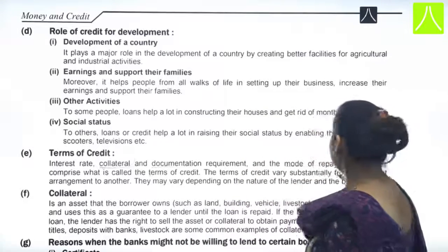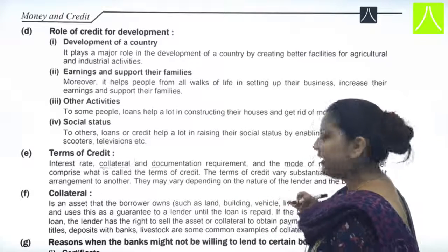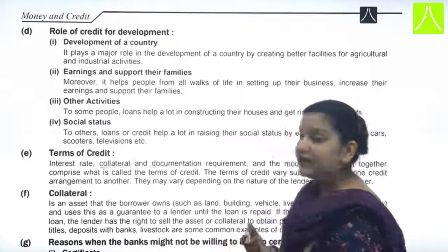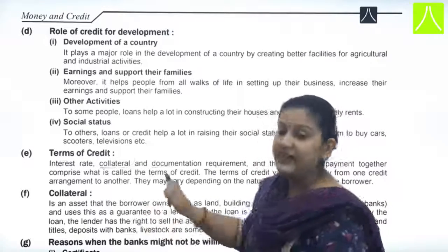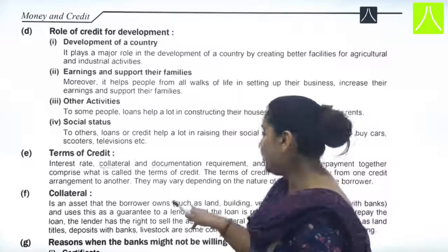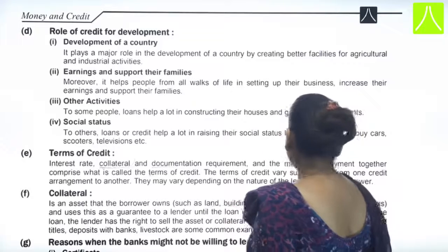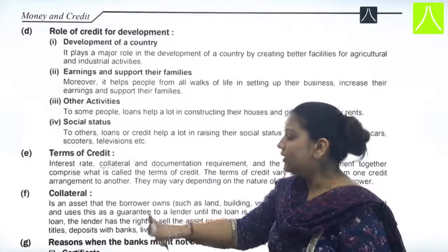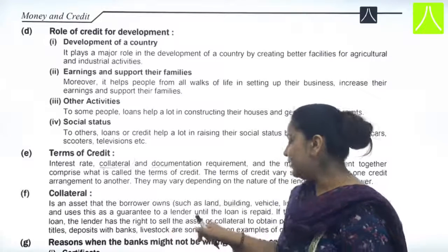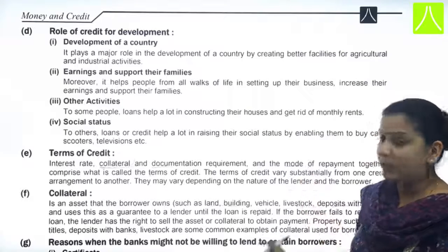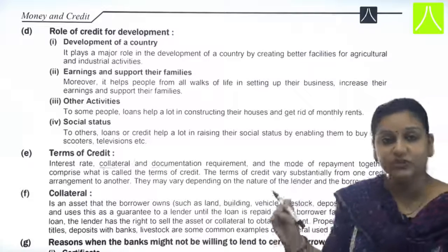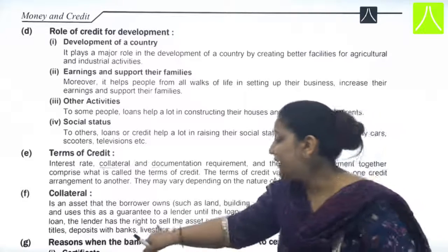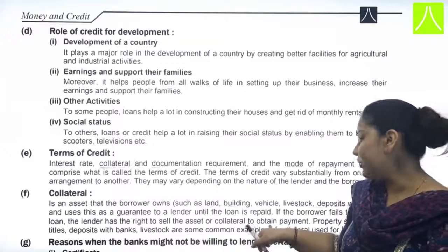Terms of credit can vary substantially from one credit agreement to another, depending upon the nature of the lender. Now to define collateral individually — collateral is basically an asset that the borrower owns right now, such as land, building, vehicle, livestock, deposits with banks, and sometimes gold. The borrower uses this as a guarantee to the lender until the loan is repaid. The bank takes it as assurance — if you cannot repay, they will sell that asset and recover their full money. If the borrower fails to repay, the lender has the right to sell the collateral to obtain payment.